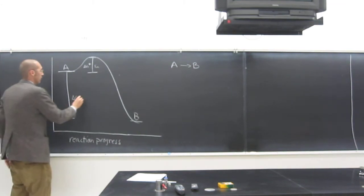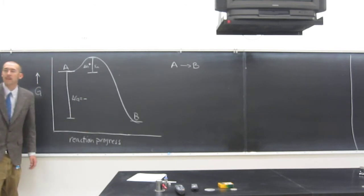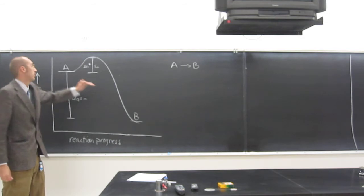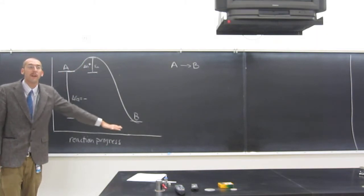right? This is an exothermic reaction, why? Because its delta G is negative, right? So heat is being given off, so the reactants are at a higher level than the product, okay?